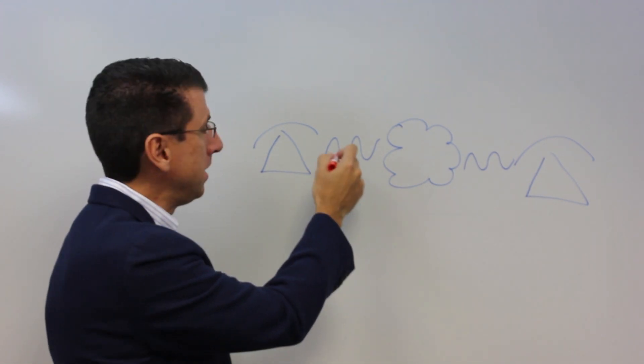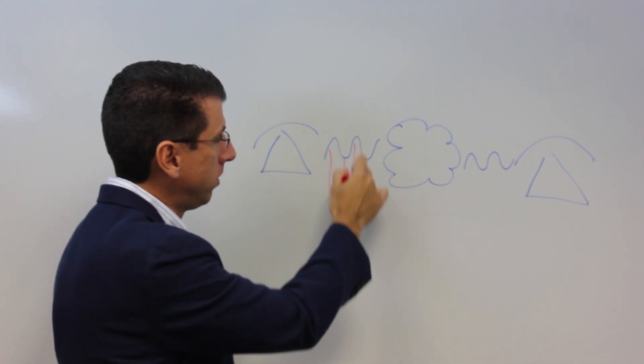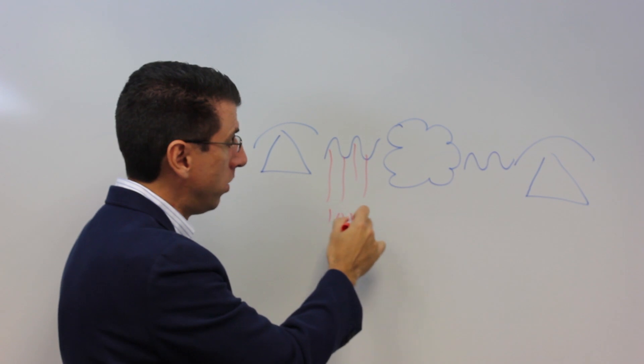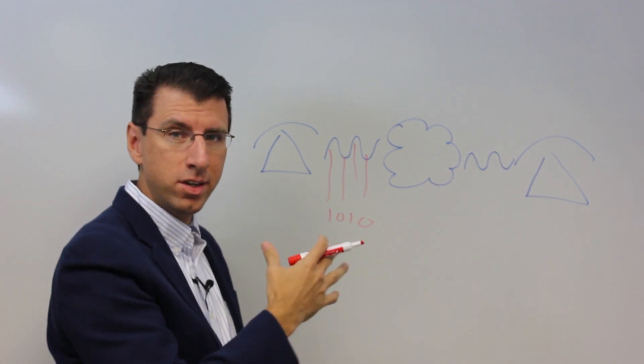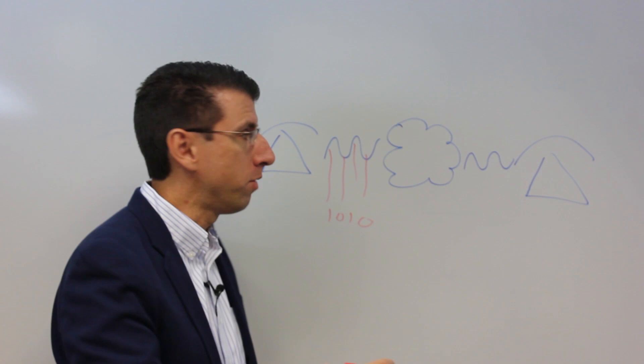So we sample the different pieces of the conversation and basically turn it into a set of ones and zeros. Those ones and zeros become the content that goes over the IP network.